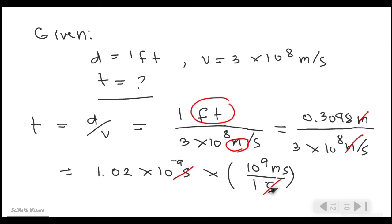And we're left with nanosecond, which is what we're looking for. And now we're gonna multiply the 1.02 times 10 to the power of negative 9 to 10 to the power of 9 nanoseconds.